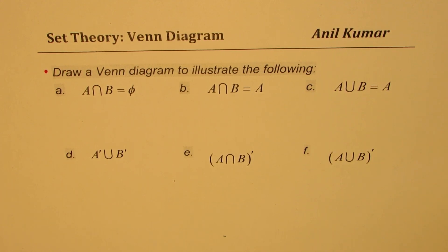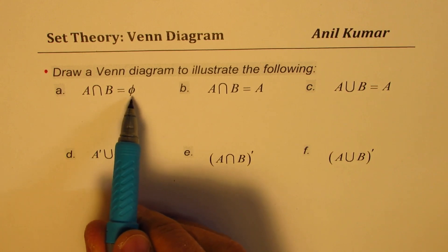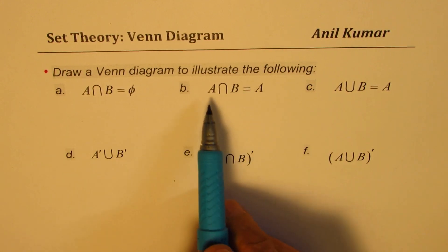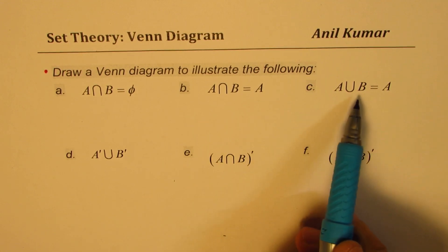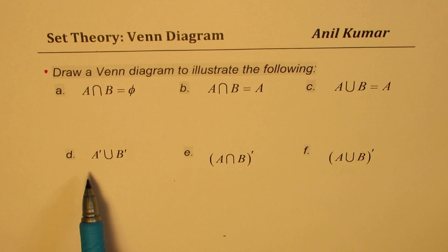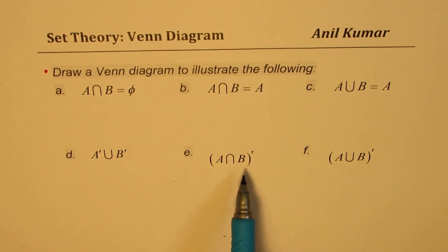Now first one here is intersection of A and B is a null set. Then we have intersection of A and B as set A, union of A and B being set A, union of complementary A complement B you have to show in a Venn diagram. You have to show on a Venn diagram what is intersection of A and B and its complement and then not A union B. That is also how we can read it. So that is the exercise for you. You can pause the video, solve this question and then check with my solution. So let's begin.